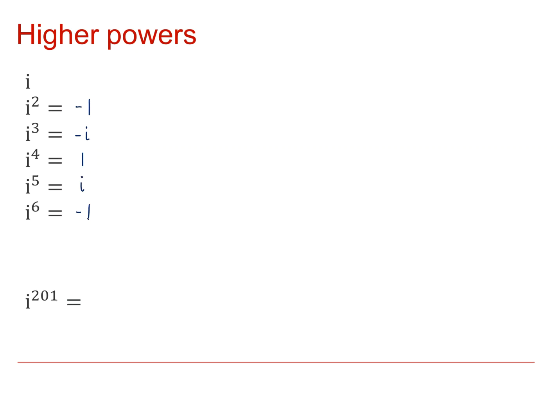So, what's i to the 201? We've got a cyclic pattern here, and every multiple of 4, we get back to plus 1. So, i to the 201 is 1 times another i, which is just i. So, however high the powers get, we can always simplify it down to 1 or minus 1, or i or minus i.